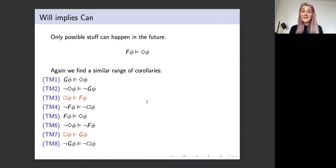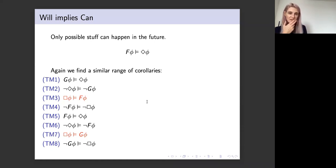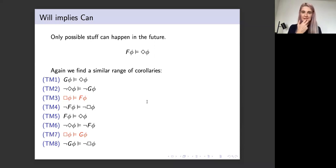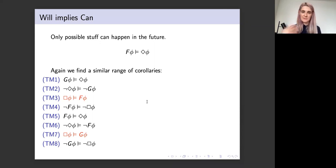We get that principle, and then a similar range of corollaries in tense modal logic. G is 'at every time in the future' — so if at every time in the future phi, that entails that phi is possible. We can contrapose that and substitute not-phi for phi, giving us: if phi is necessary then phi happens in the future. That doesn't seem to have any negations in it. So we have a selection of tense modal principles about the interaction between tense and modal operators, some of which seem to take us from things not about the future to conclusions that are about the future, threatening the barrier to entailment.